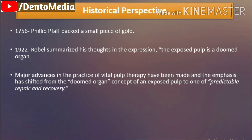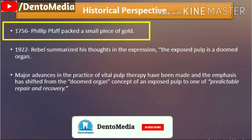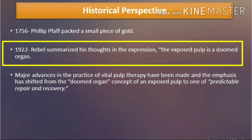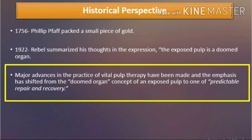Historical perspective: the earliest account of vital pulp therapy was in 1756, when Philip Pfaff packed a small piece of gold over an exposed vital pulp to promote healing. In 1922, in light of his experiences with similar antiseptic treatments, Rebell summarized his thoughts in the expression: "the exposed pulp is a doomed organ." However, major advances in the practice of vital pulp therapy have been made, and the emphasis has shifted from the doomed organ concept of an exposed pulp to one of predictable repair and recovery.